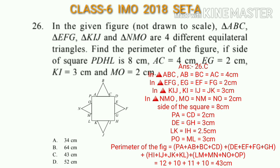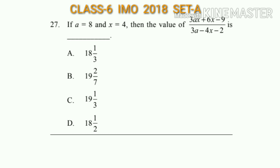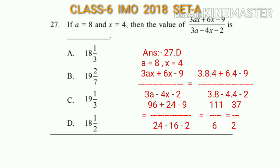Question number 27: If a = 8 and x = 4, find the value of (3ax + 6x − 9) / (3a − 4x − 2). Substituting the values of a and x gives 111 divided by 6, which equals 18 and a half. So the answer will be option A.